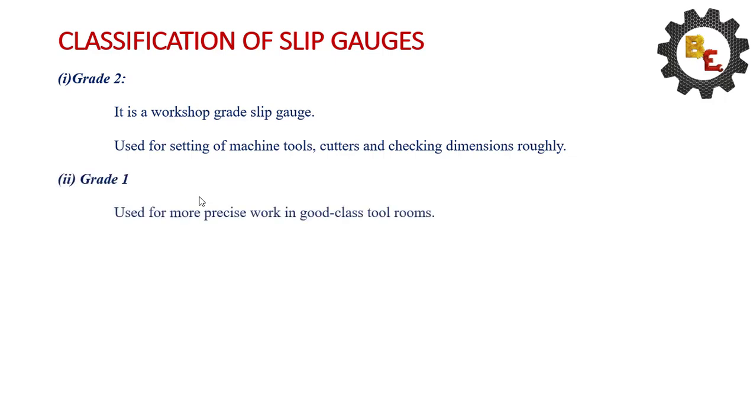Grade 1 slip gauges are used for more precision work in good class tool rooms. Used to set sine bars, sine tables, setting dial indicators.